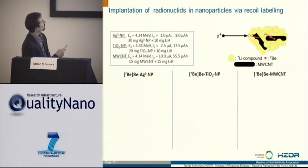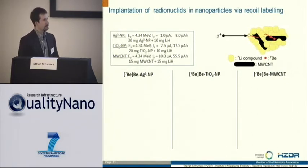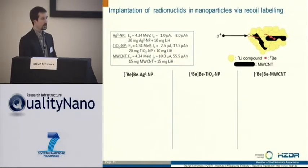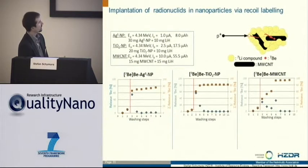These are the experimental procedures for all our particles. The proton energy used is 4.34 mega electron volts. After irradiation, we cannot just take the material — we have to wash the residual lithium away. Most of the activity will actually not be inside the particles but mixed with the lithium and will be washed away. These washing steps remove up to 90% of the produced radioactivity.